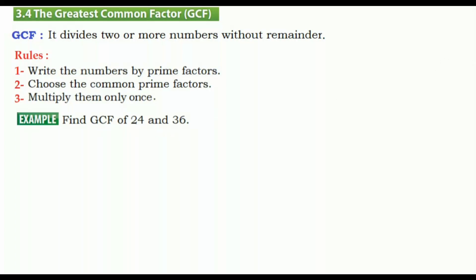First, we are going to find the prime factorization of 24. How can we get 24 by multiplying? We can use four and six. Is four prime? No. Is six prime? No. Let's continue to find more factors — four gives us two and two.